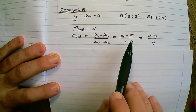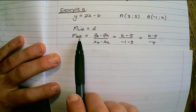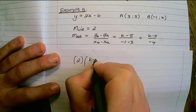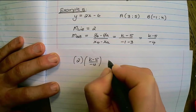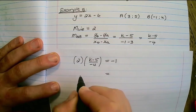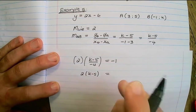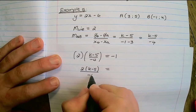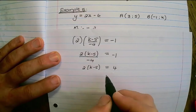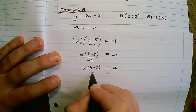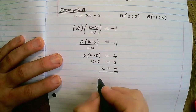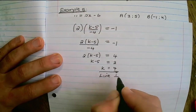Using the same values, we find k if the line is perpendicular to AB. In that case, 2 times k minus 5 over negative 4 must equal negative 1 for perpendicular lines. Multiplying out, the numerator is 2k minus 5 over negative 4 equals negative 1. Multiplying negative 1 by negative 4 gives 4, then dividing both sides by 2 and solving gives k equals 7.